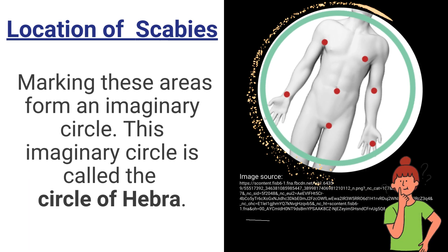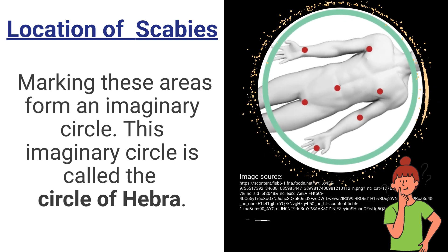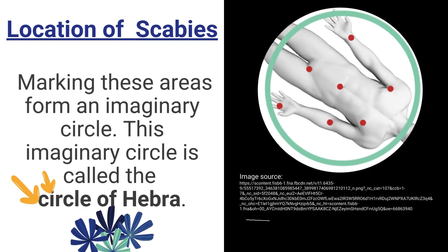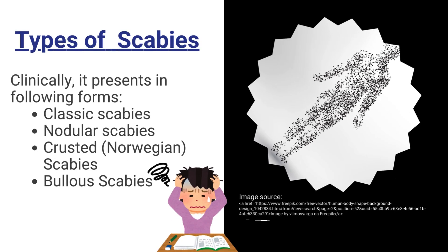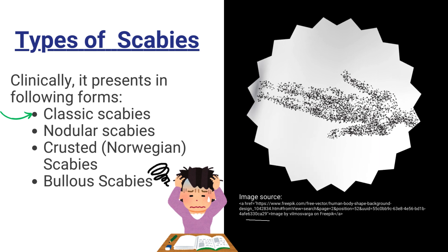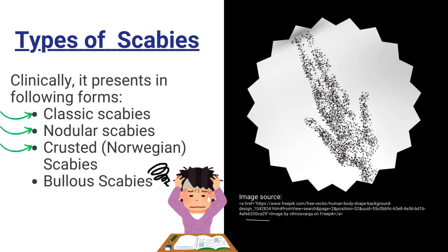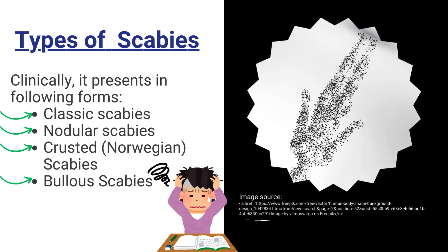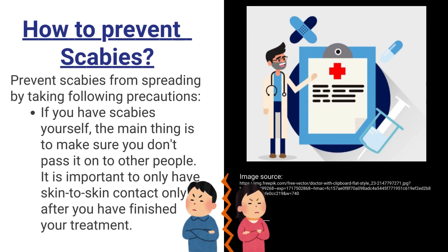These areas form an imaginary circle called the Circle of Hebra. Clinically, scabies presents in the following forms: classic scabies, nodular scabies, crusted Norwegian scabies, and bullous scabies.